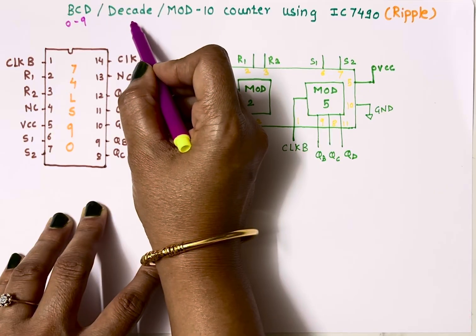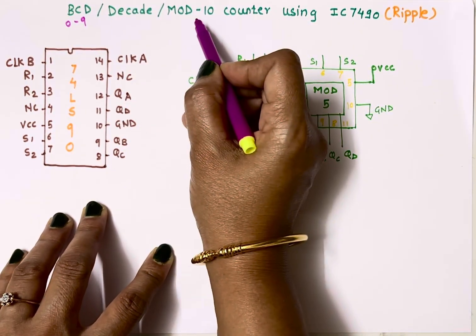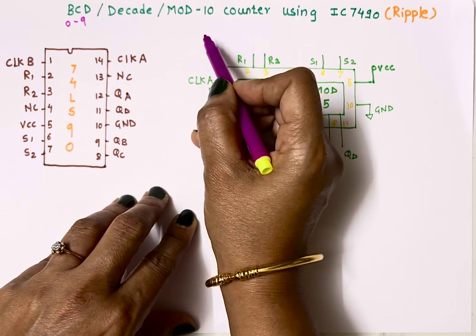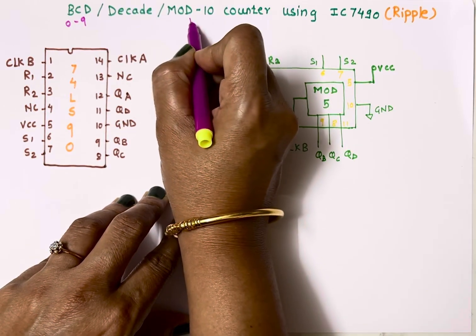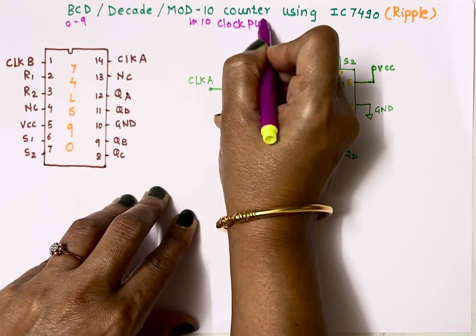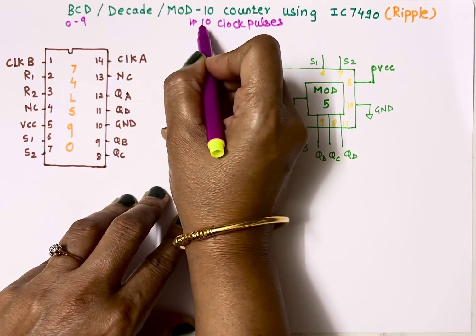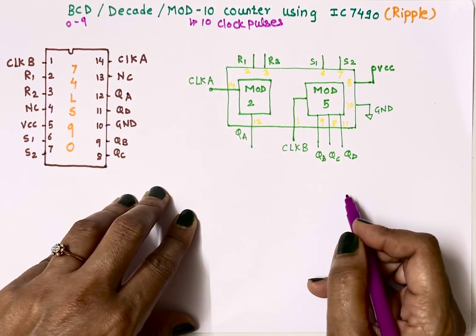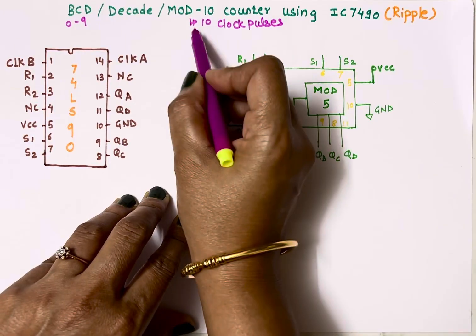These numbers are from 0 to 9, so this counter also counts from 0 to 9 and that is why name is given as decade counter. Mod-10 means it will count 10 clock pulses. In digital we always start with 0, so 0 to 9 it will count total 10 clock pulses.